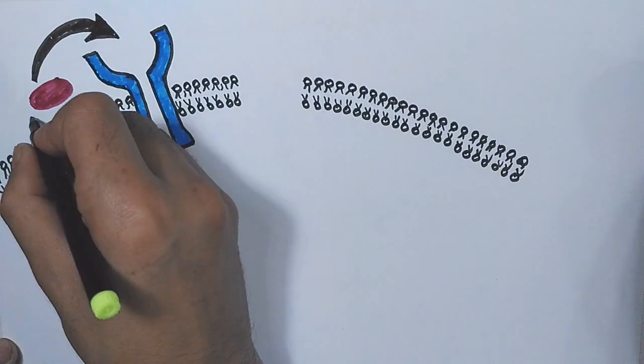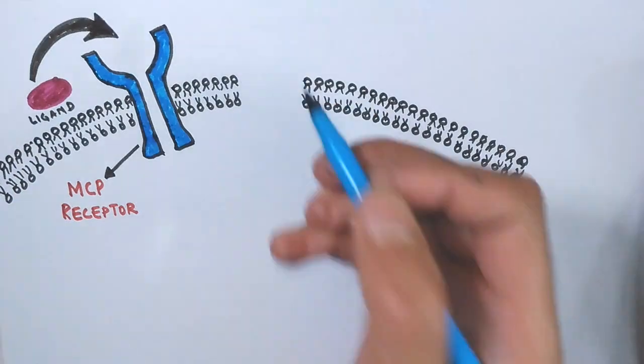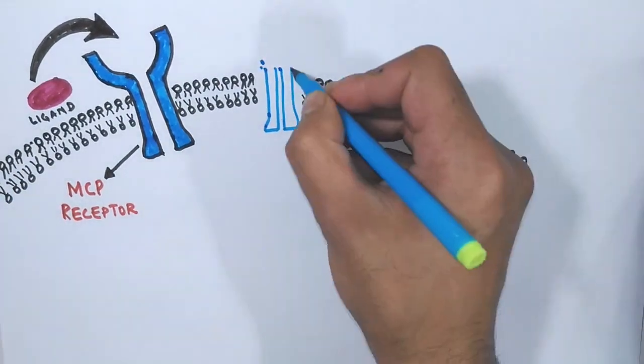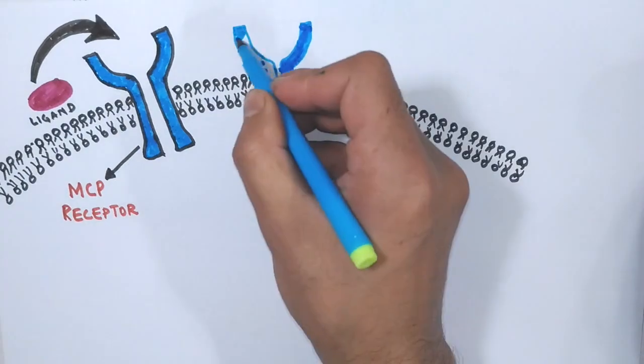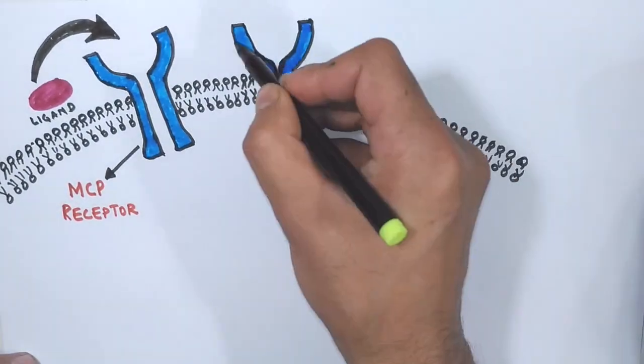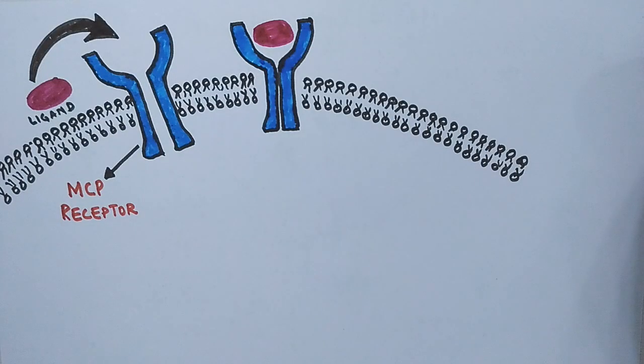As you can see in this diagram, the repellent acts as a ligand for the MCP receptor and shows ligand binding activity towards this receptor. The binding of ligand to receptor is followed by the dimerization of MCP. Now the MCP has got conformational changes in its structure, meaning it has been activated by the ligand.